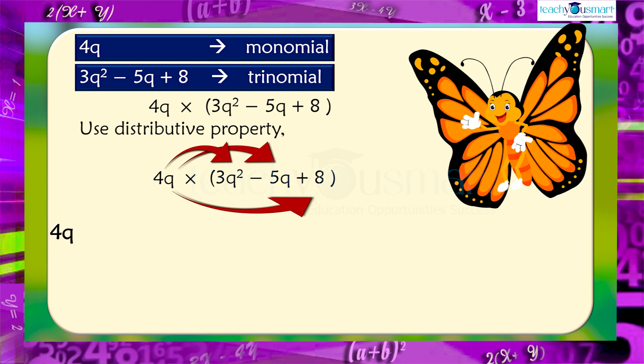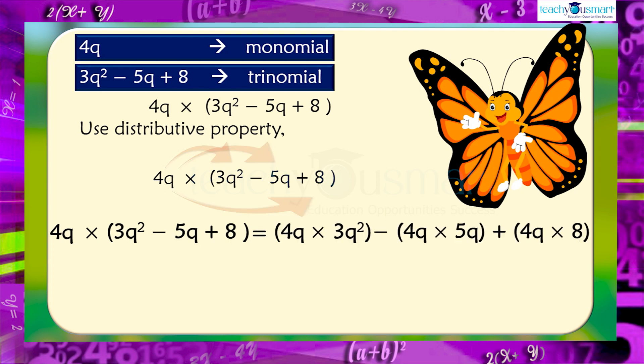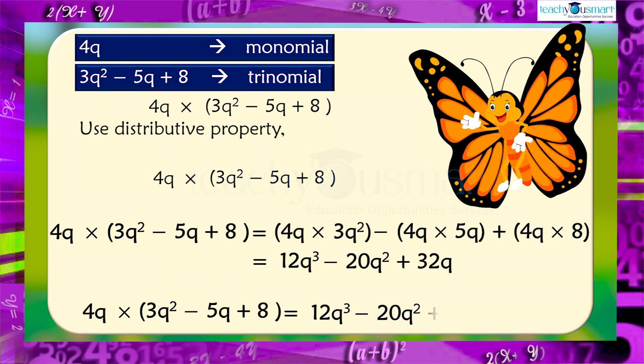That is, 4q multiplied by 3q² minus 5q plus 8 equals 4q multiplied by 3q² minus 4q multiplied by 5q plus 4q multiplied by 8 equals 12q³ minus 20q² plus 32q.